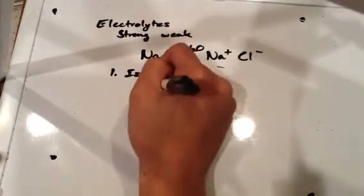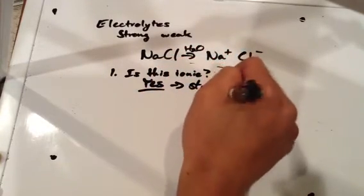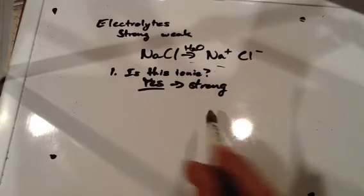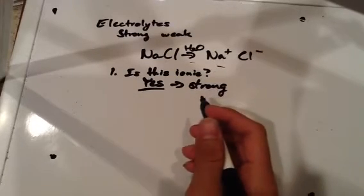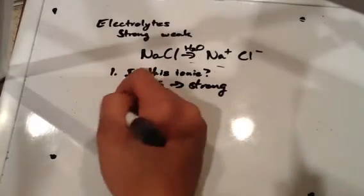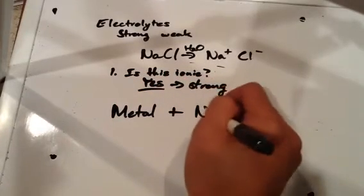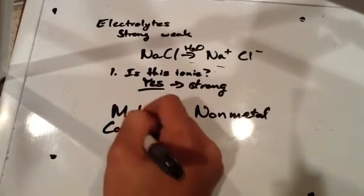Because if yes, then it is going to be strong, no matter what. If you see an ionic compound like NaCl, you know it's strong. How do you identify an ionic compound? Typically, you're going to have a metal, and you're going to have that bind to a non-metal.